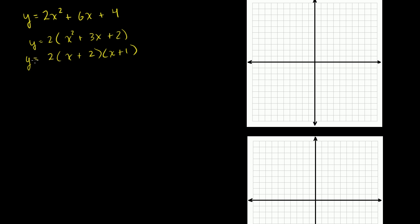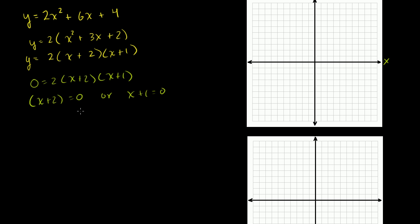So if we want to know the x-intercepts, we figure out where this expression equals 0: 0 is equal to 2 times x plus 2 times x plus 1. The 2 can't equal 0, so either x plus 2 equals 0, giving x equals negative 2, or x plus 1 equals 0, giving x equals negative 1. So the points negative 2 comma 0 and negative 1 comma 0 are our x-intercepts.